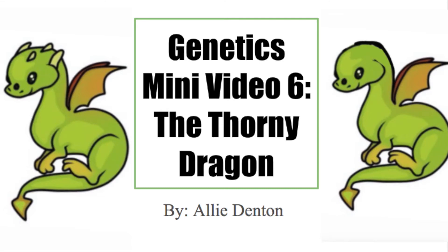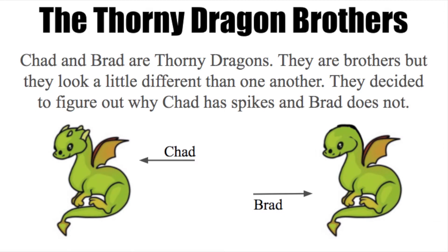Hi, my name is Ali Denton, and this is my genetics mini video 6 on thorny dragons. Chad and Brad are thorny dragons. They are brothers, but they look a little different than one another. They decided to figure out why Chad has spikes and Brad does not. In this picture, you can see Chad on the left and Brad on the right.